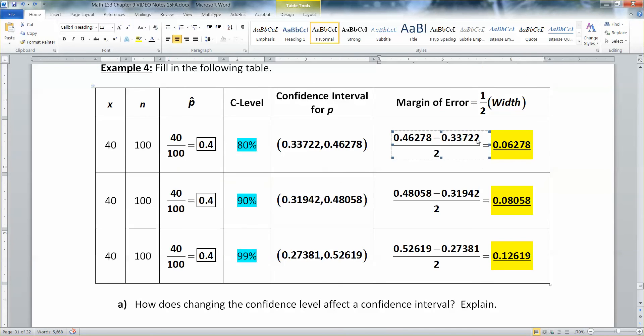So 0.48058 minus 0.31942. It doesn't really matter which way you do it because it's still division by two of that subtraction. So as long as you have parentheses around that subtraction part, that's the important part. There we have it. So now I've got to type those answers in.